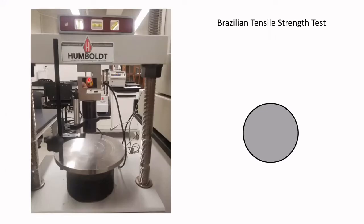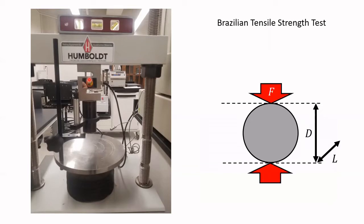The method that we use to measure the tensile strength is called Brazilian tensile strength test. Here we use a frame to apply a force on a cylindrical sample. In this cylindrical sample, diameter and length have the same length, and the force that we are applying is along the cylindrical side of the sample.